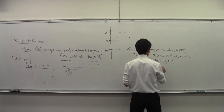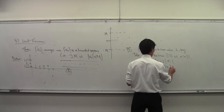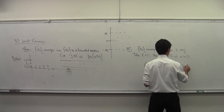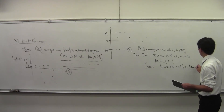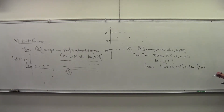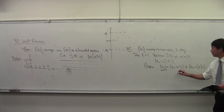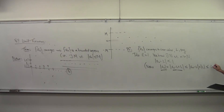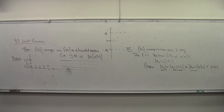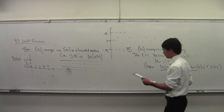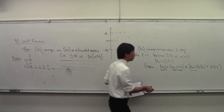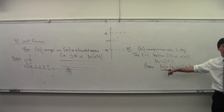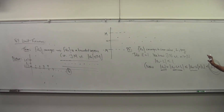Notice then that by the triangle inequality, |a sub n| equals |a sub n minus L plus L|, which is smaller than |a sub n minus L| plus |L|. And so that's smaller than |L| + 1, because |a sub n minus L| is smaller than 1. So this number |L|+1 controls everybody past that N.